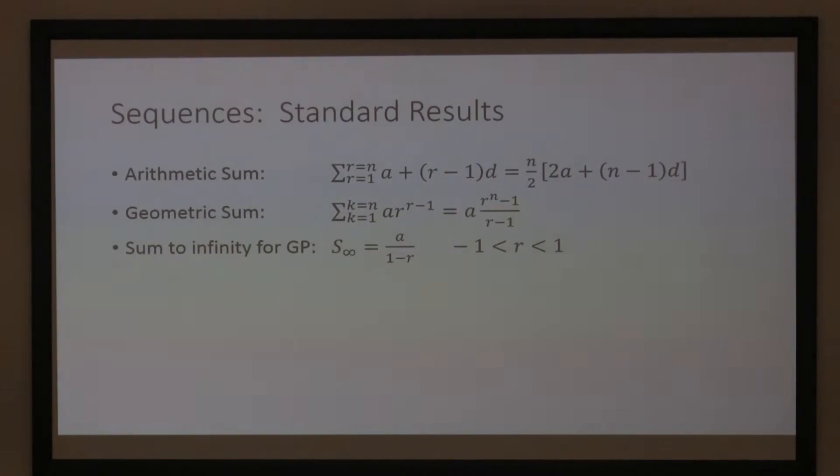Sum to infinity. So, if you've got a geometric sequence where the common ratio lies between minus 1 and 1, when you add up an infinite number of those terms, you will get a finite value. And the finite value is a over 1 minus r.